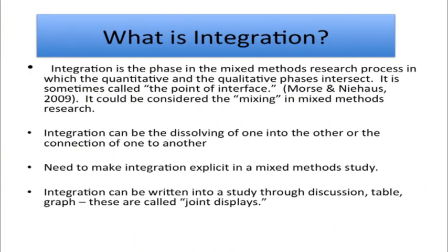Now let me shift to the second topic: integration. Integration really is the point in a mixed methods project where the quantitative and qualitative phases intersect or bump up against each other. There's even a term in the field called point of interface that describes this intersection between the two. That intersection could be one where the two actually dissolve into each other, or where they're kept separate. In a good mixed methods study, integration is a key component and you as a researcher need to make it very explicit. It can be written into a study in many ways — through a discussion, a table, or a graph. These tables are often called joint displays.